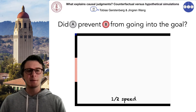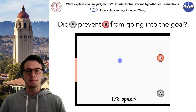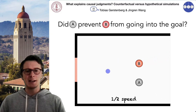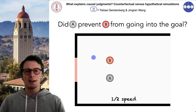We asked a participant whether ball A prevented ball B from going into the goal, and put that participant in front of an eye tracker. What we see is that the participant didn't just look at ball A and ball B, but also tried to simulate where B would have ended up if ball A hadn't been present in the scene.